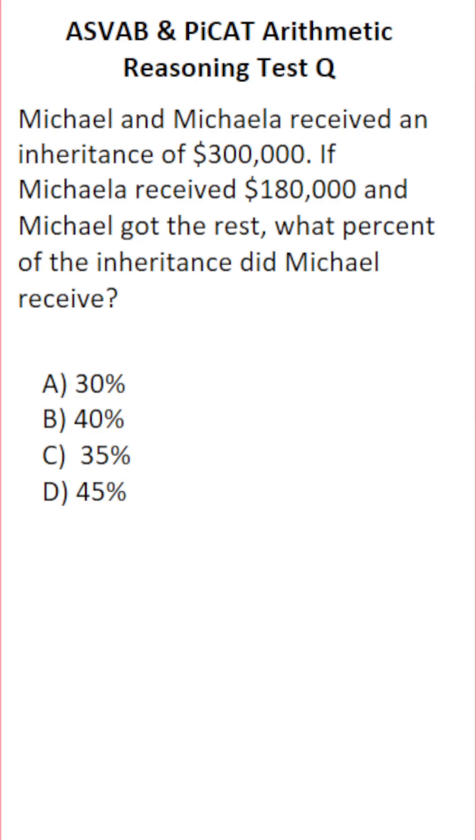First we have to figure out how much money Michael received. To do that, we're going to do $300,000 - that is the amount of their inheritance - subtracted by Michaela's share. She got $180,000.